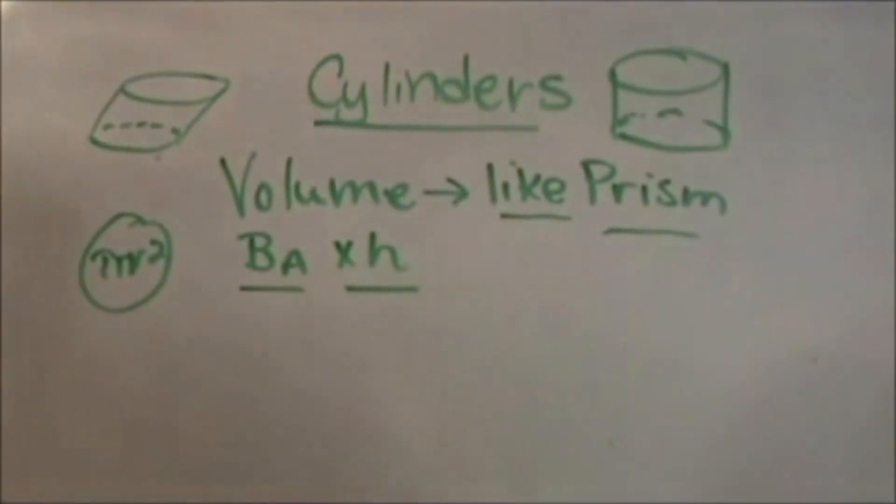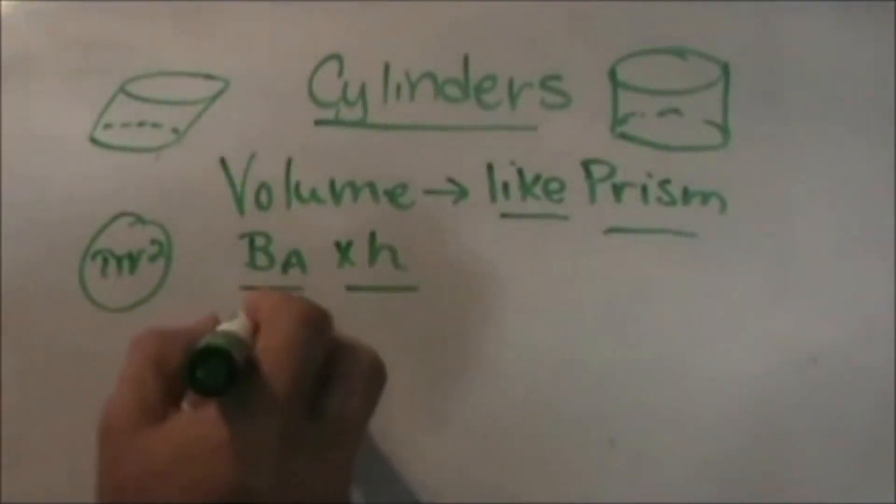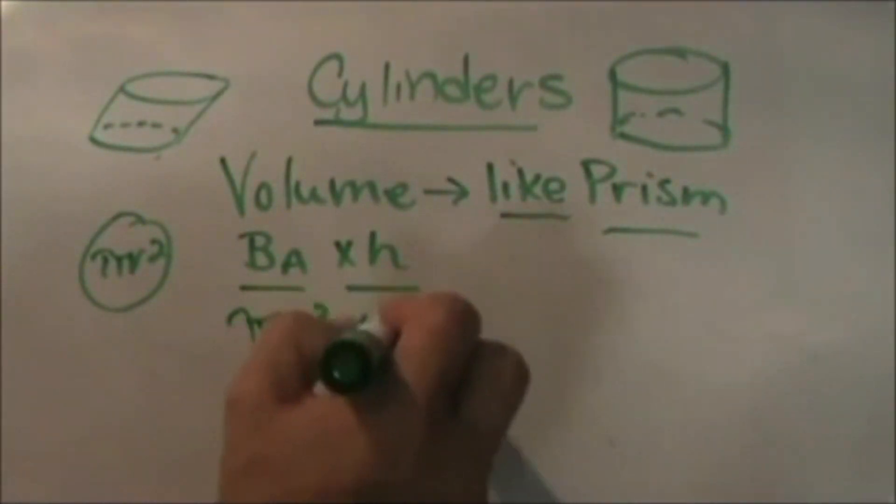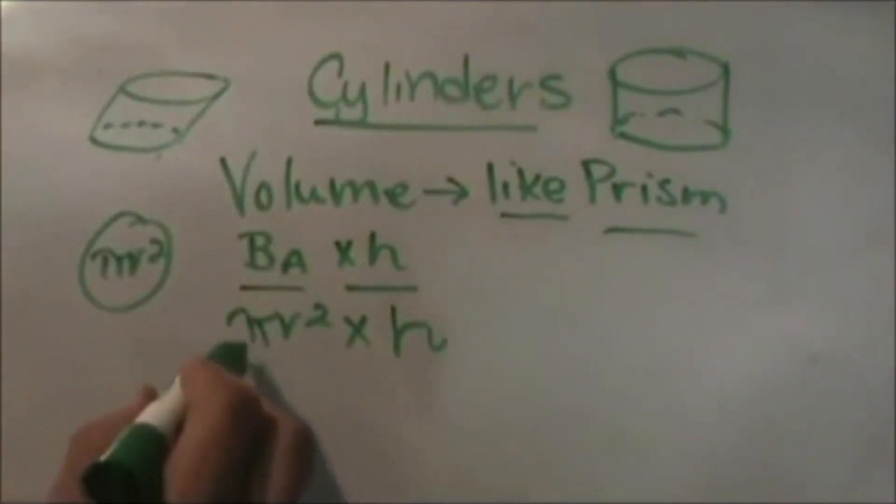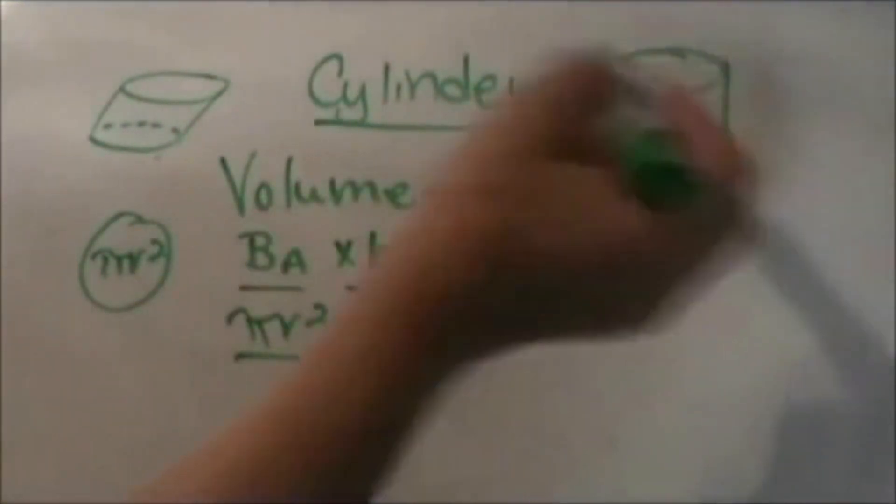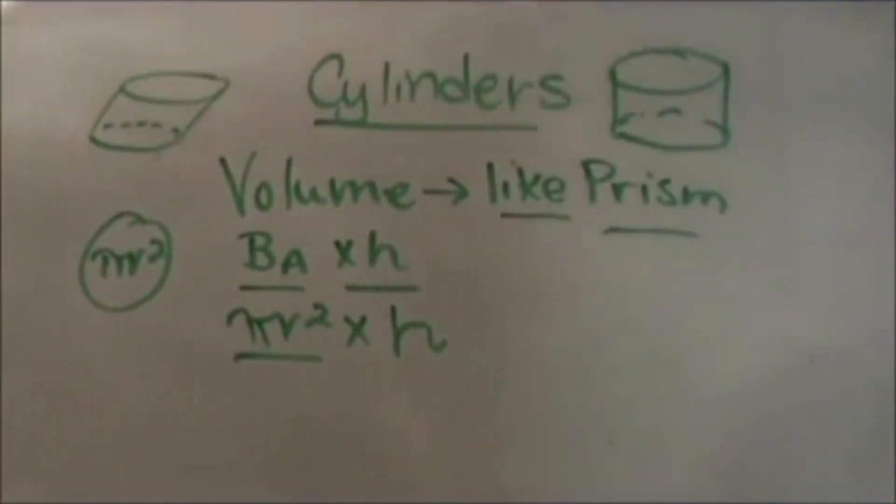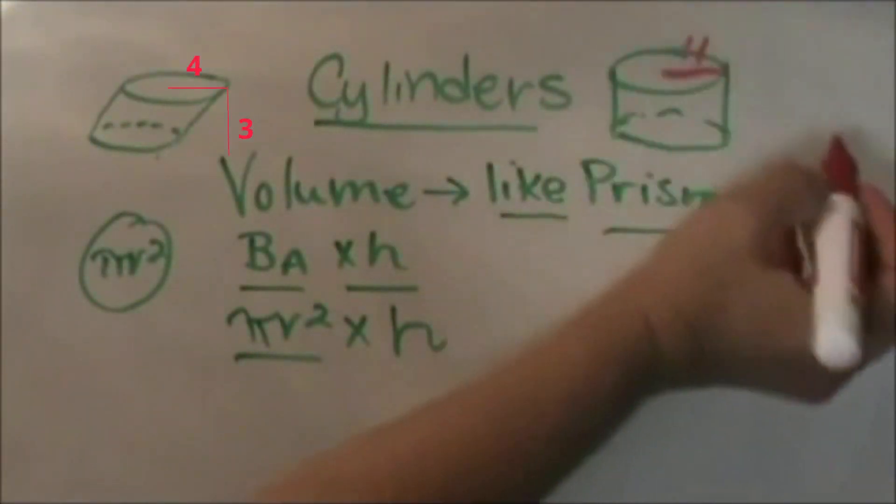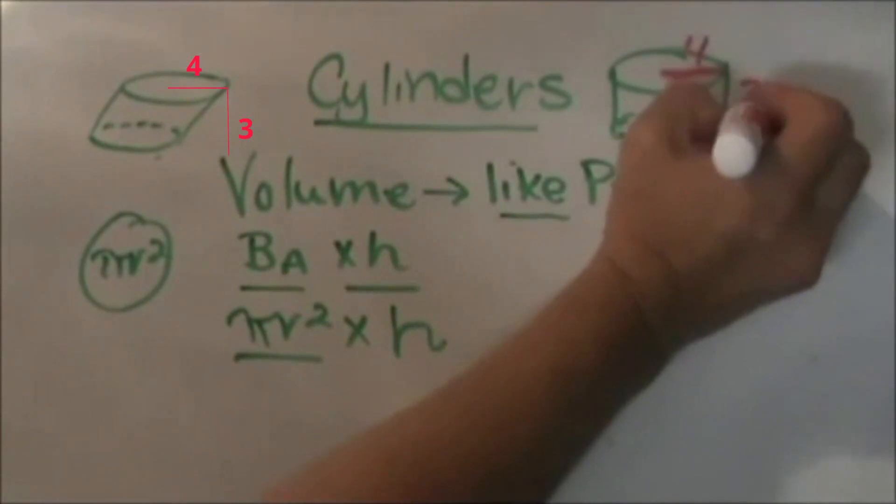So we're going to take πr² times the height of the cylinder. Let's throw in some numbers. Let's give ourselves a radius of 4 and a height of 3.